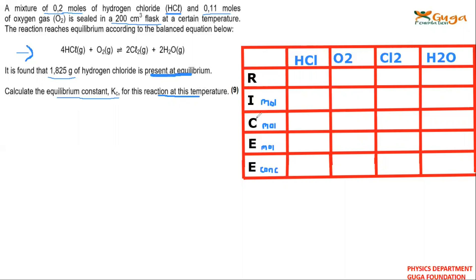We start with our ICE table. Here you list the reactants and products. The ratio is 4 for HCl, 1 for O₂, 2 for Cl₂, and 2 for H₂O. Initially we have 0.2 moles of HCl and 0.11 moles of O₂. On the products side, you have got zero initially.